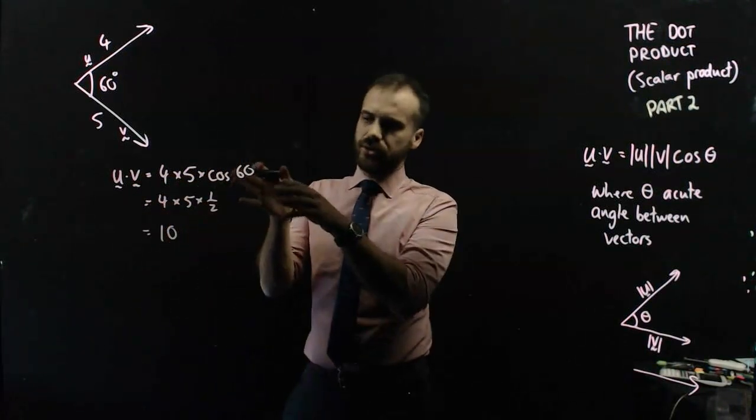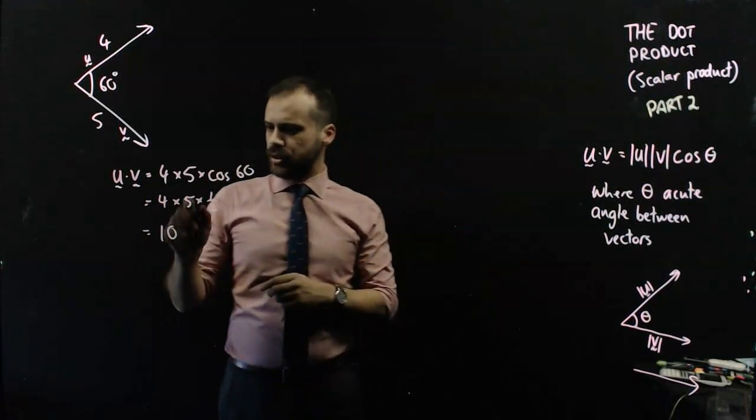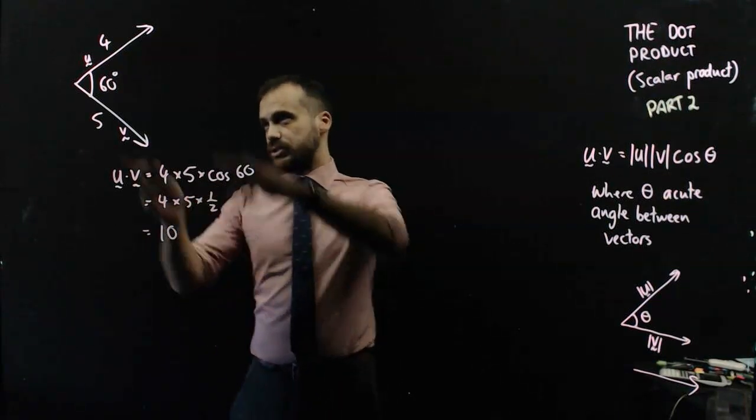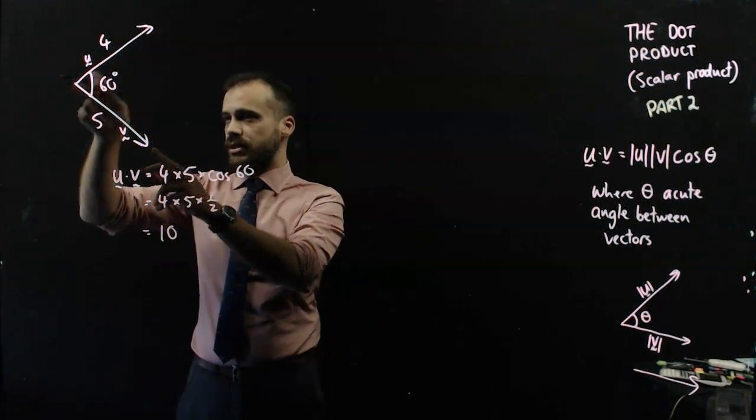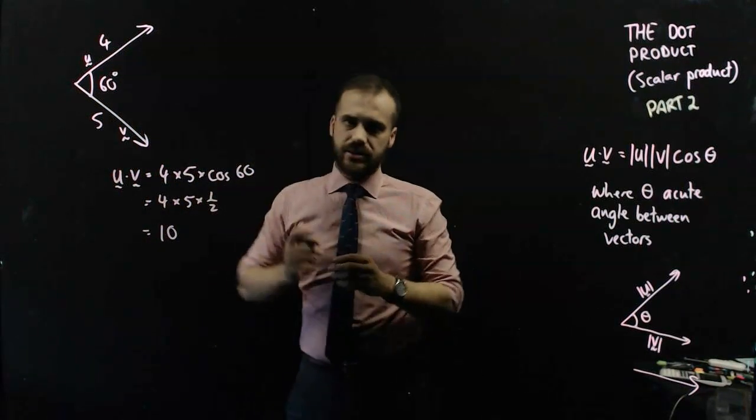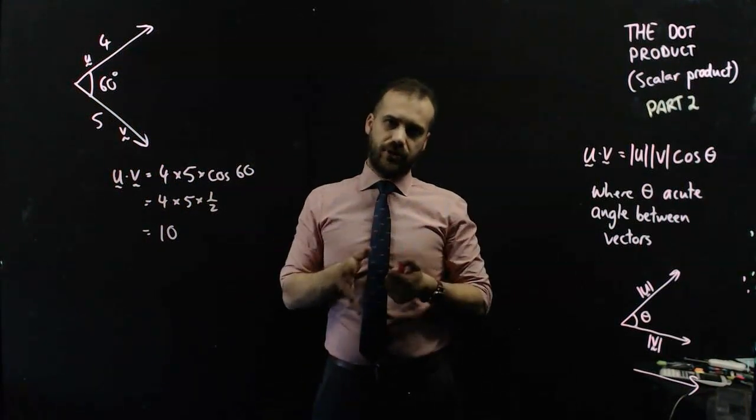Now you might know that cos 60 is 1/2, but trust me on it. So we can say that the dot product of u and v is 10. That's our most simple version here.